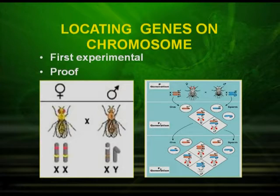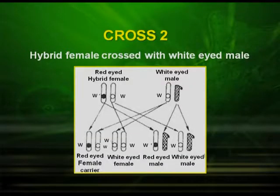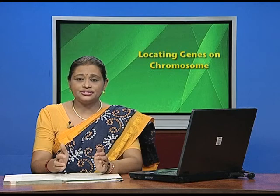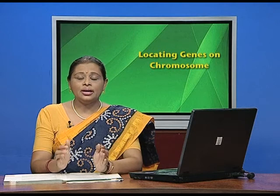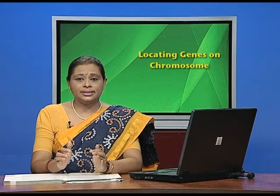In the next set of crosses, he crossed the hybrid female with the white-eyed male — a test cross between the heterozygous condition and the homozygous recessive male. He observed four types in the offspring: red-eyed female, red-eyed male, white-eyed female, and white-eyed male.